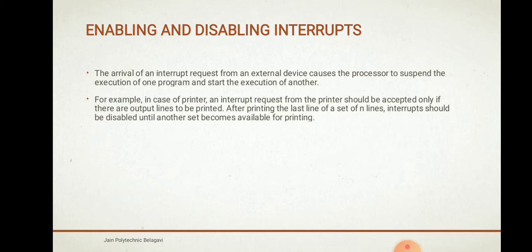The interrupt should be accepted only if there are output lines to be printed. After printing the last set of n lines, the interrupt should be disabled until another set becomes available for printing. So while printing a document, the printer interrupt causes other programs to not execute — only the printer program runs. Once it finishes printing a set of lines, the interrupt is disabled; when another set of lines comes for printing, the interrupt is enabled again.